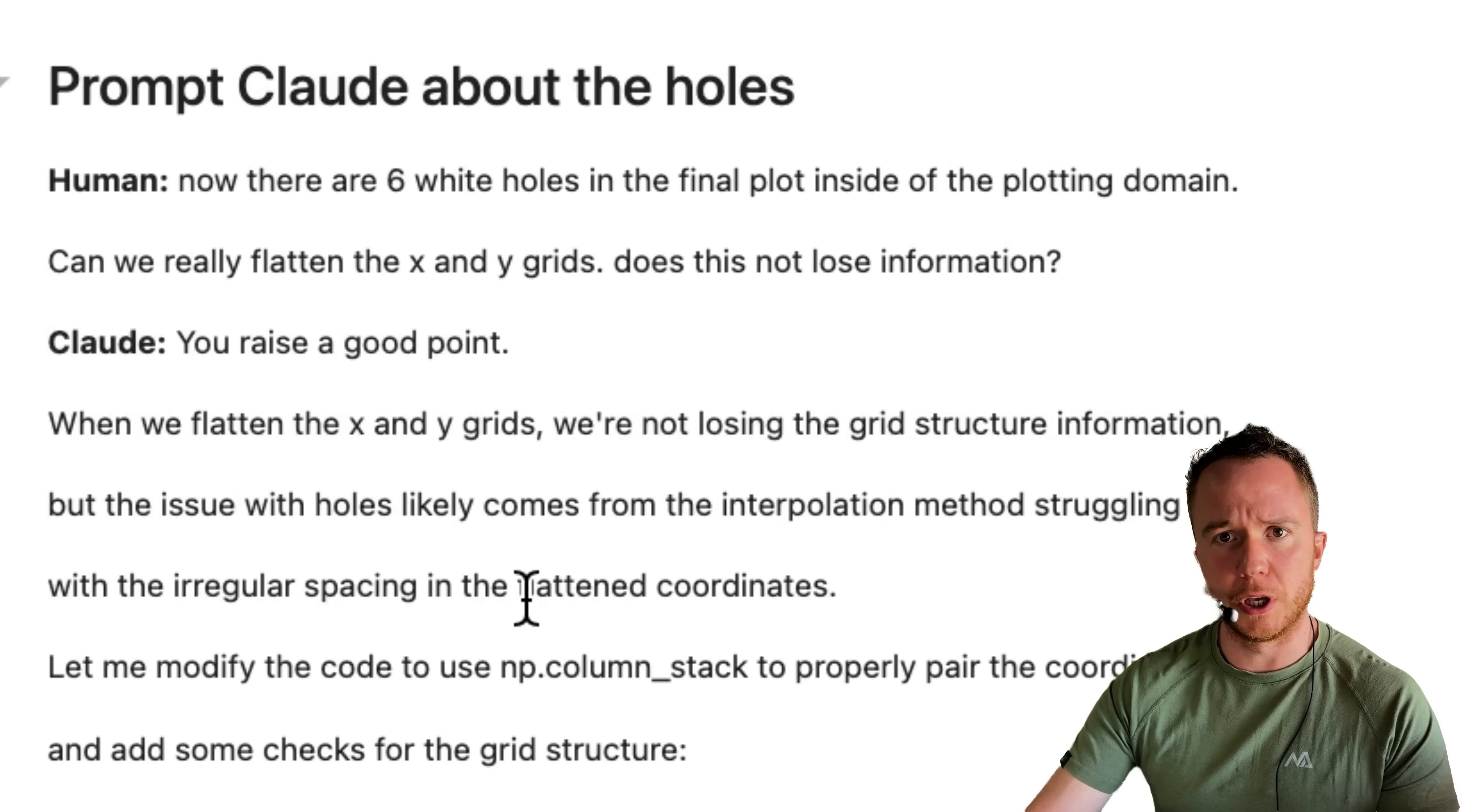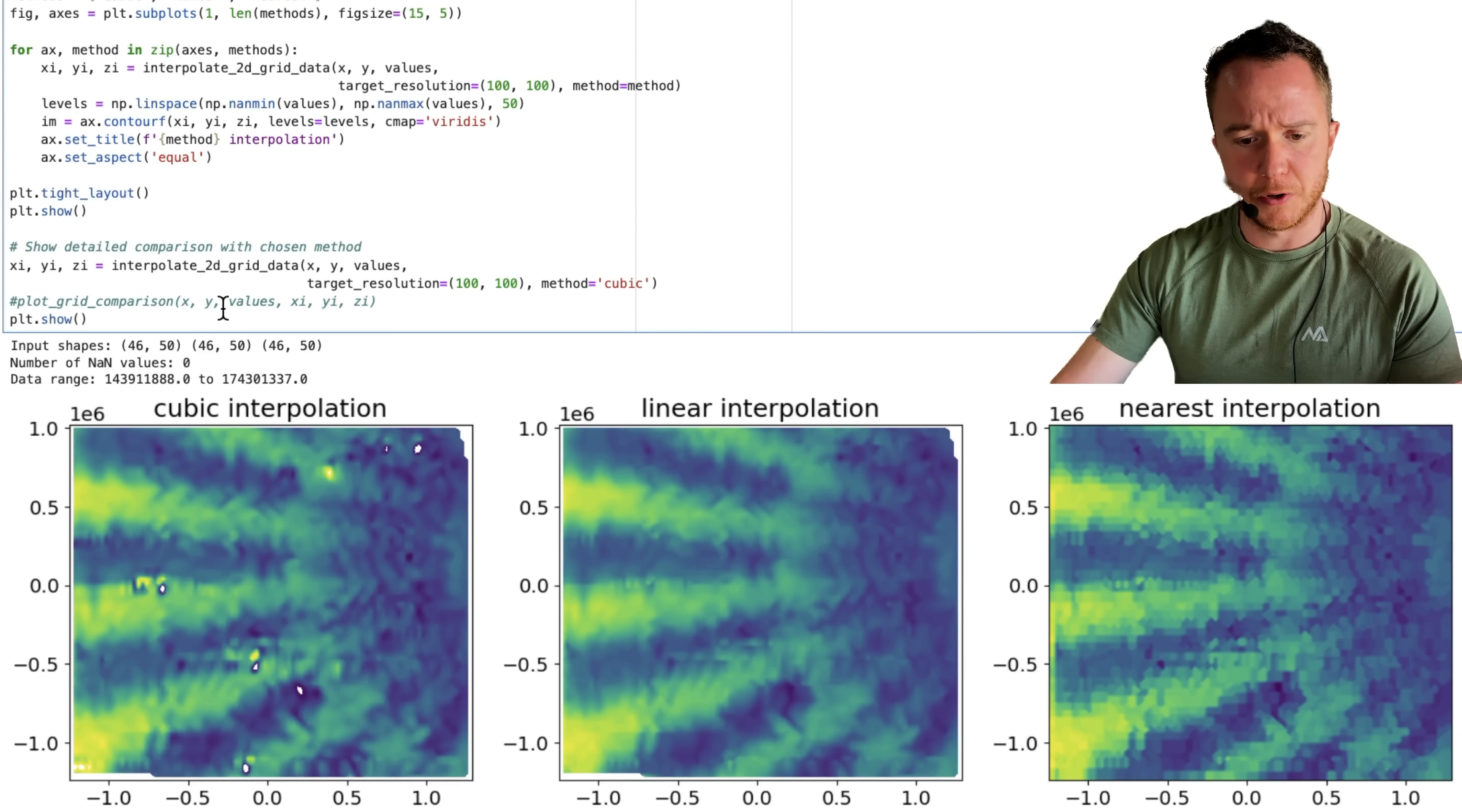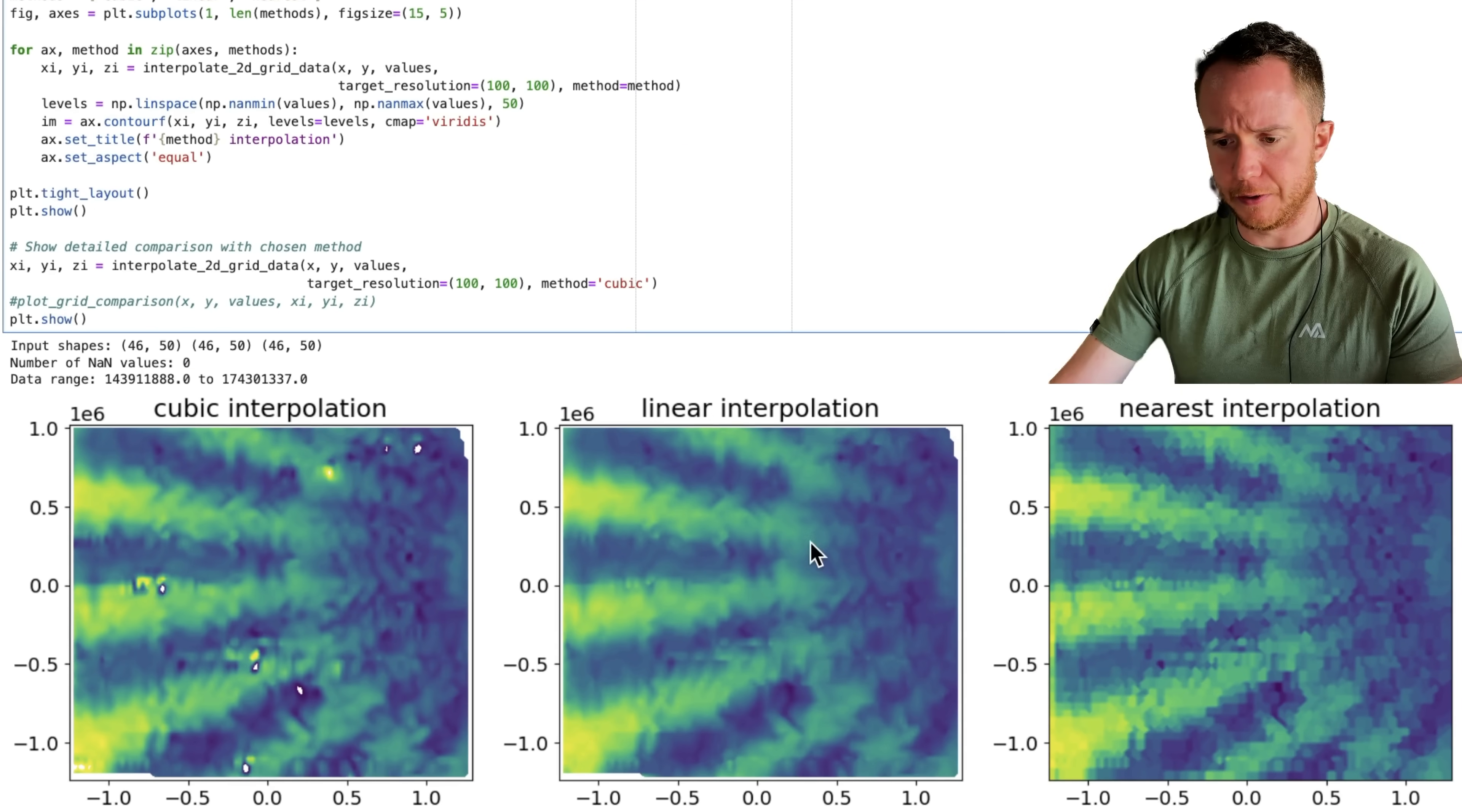Then it made some modifications that didn't really change anything about the result, so I deleted that code to keep it simple, but it did some other things, and I'm just going to show you the result. So it created code that lets us compare the cubic to the linear to the nearest neighbor interpolation, and we see that only the cubic interpolation shows these holes. The other two don't.